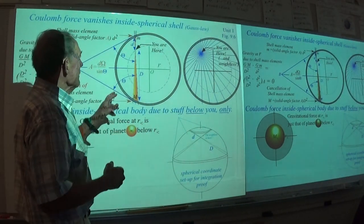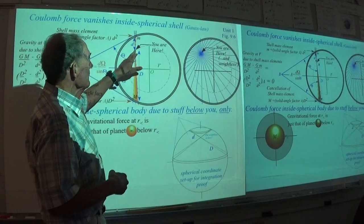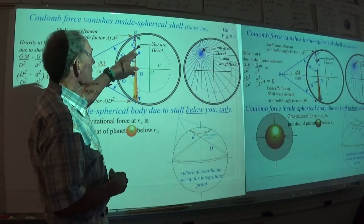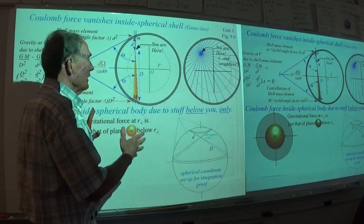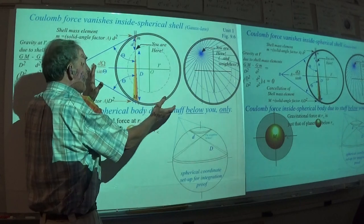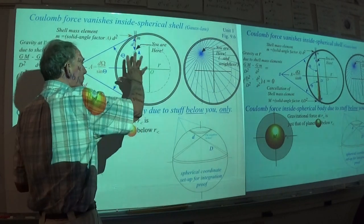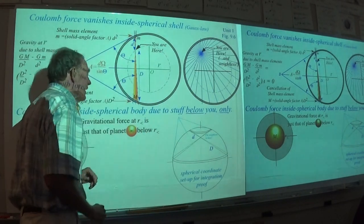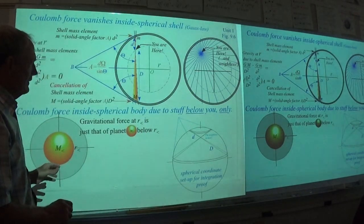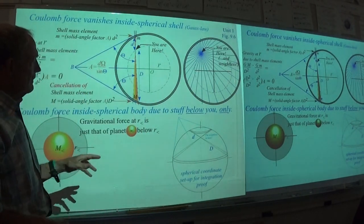What that means then is: no matter what shell I use, it's always going to be weightless inside. This is the basic idea — the geometrical approach to Gauss's law showing that the field inside a uniform shell is zero.